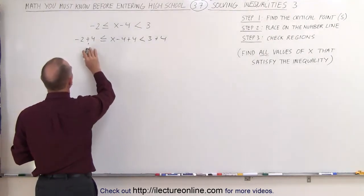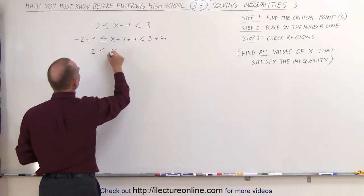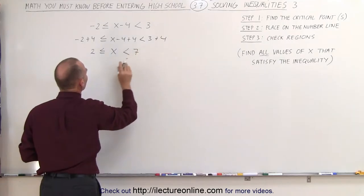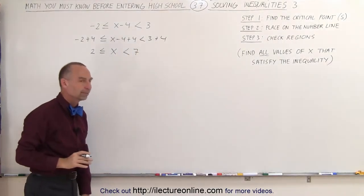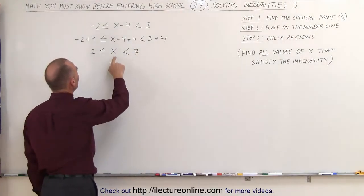By doing that, the left side becomes a positive 2, less than or equal to simply an x without the number, less than 3 plus 4, which is 7. And now this looks a lot cleaner. Now we see that x lies between 2 and 7.